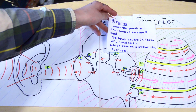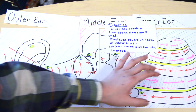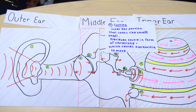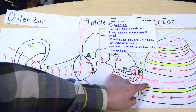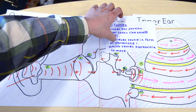The cochlea is the inner ear portion that looks like a small snail. It receives sound in the form of vibrations, which causes the stereocilia within the cochlea to move.